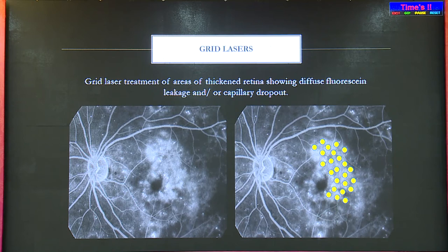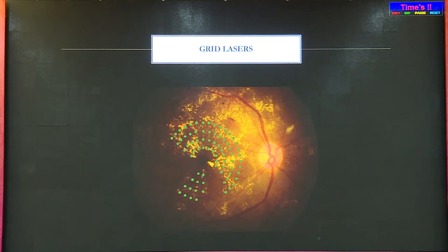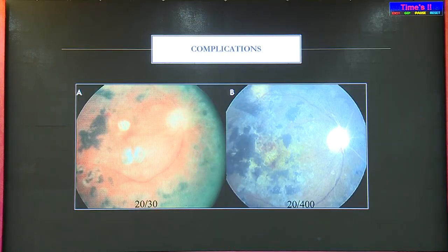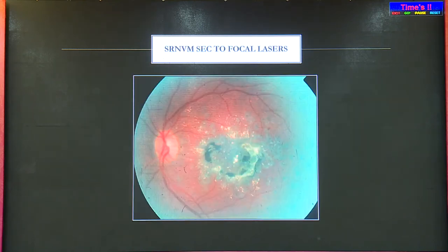Grid lasers use the same settings as focal lasers. They are done in areas where there is diffuse leakage and you cannot identify pinpoint leaks. Spots must be one burn width apart. The grid must be at least 500 microns away from the fovea and away from the disc. Complications: do not go too close to the fovea, as laser marks enlarge and can cover the fovea. Hard laser spots can lead to SRNVM and CNVM post-laser, so be cautious.